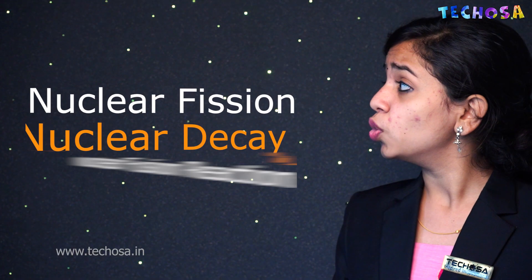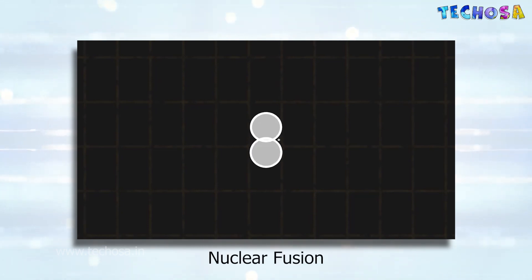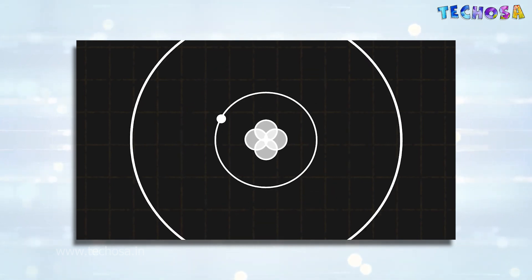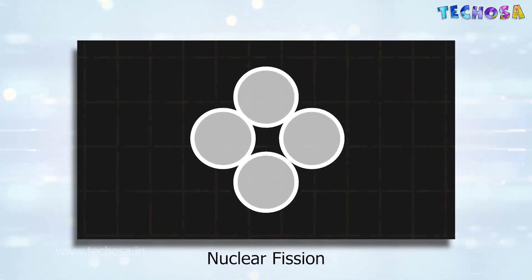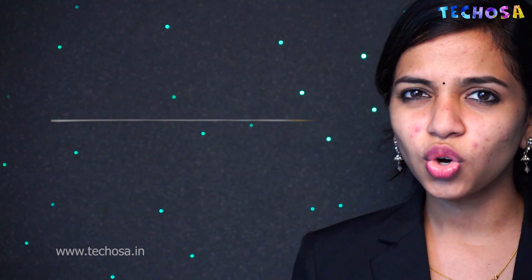Nuclear power can be obtained from nuclear fission, nuclear decay, and nuclear fusion reactions. Nuclear decay, or radioactive decay, is the process of losing nuclear energy by radiation. In nuclear fusion, nuclear power is obtained by holding atoms together, whereas in nuclear fission, atoms are split apart to produce nuclear power. Nuclear fission releases several million times more energy than any chemical reaction could.